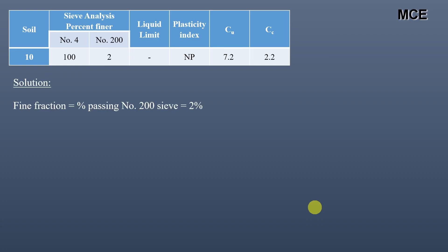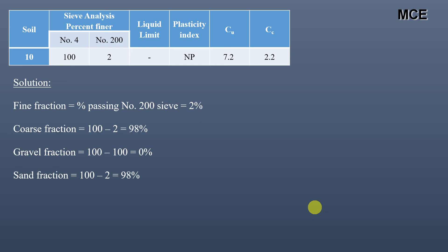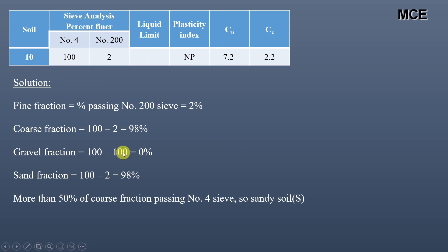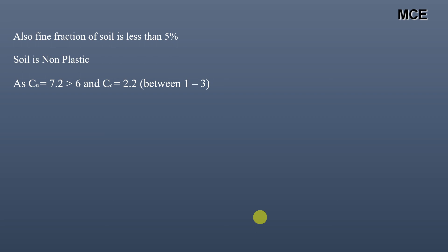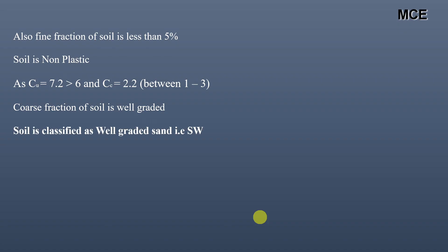For soil 10, fine fraction is 2%, coarse fraction is 98%, gravel fraction is 0%, sand fraction is 98%. This is a coarse-grained sandy soil. Fine fraction is less than 5%, so we don't check consistency — the soil is non-plastic. Cu is 7.2 (greater than 6) and Cc is 2.2 (between 1 and 3), so the soil is well-graded. The soil is classified as Well Graded Sand, group symbol SW.